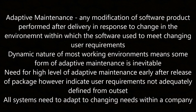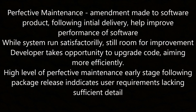Adaptive maintenance is any modification of the software product performed after delivery in response to a change in the environment within which the software is used, to meet changing user requirements. The dynamic nature of most working environments means some form of adaptive maintenance is inevitable. A high level of adaptive maintenance early after release indicates user requirements were not adequately defined from the outset. Perfective maintenance is an amendment made to the software following initial delivery to help improve its performance. While it may run satisfactorily there is still room for improvement, and the developer takes the opportunity to upgrade the code to be more efficient. A high level of perfective maintenance early on indicates user requirements are lacking in sufficient detail.